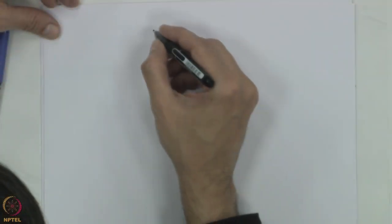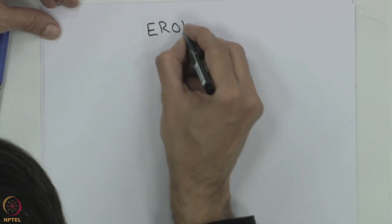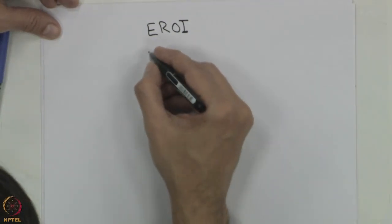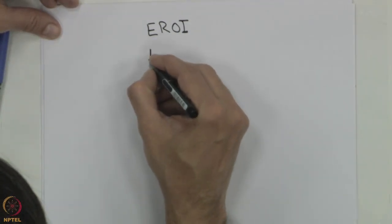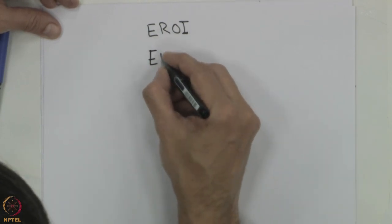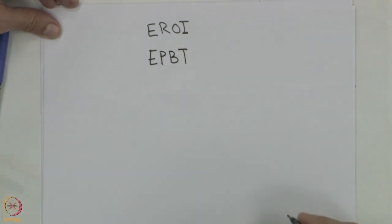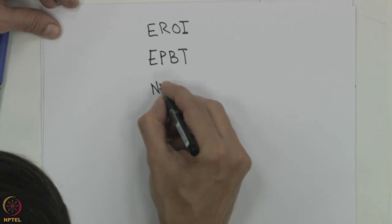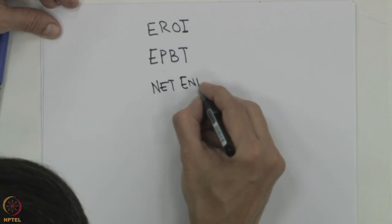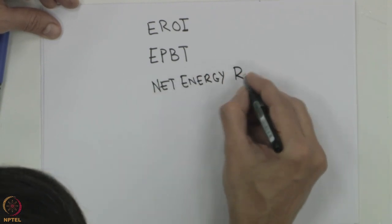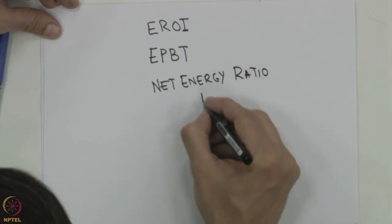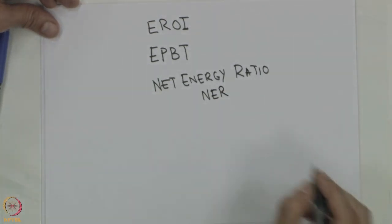We have been looking at net energy analysis and life cycle analysis, and we continue with that with some examples. Before we do that, let me again remind you about the criteria we talked of. We talked about the Energy Return on Investment (EROI), we also looked at the Energy Payback Time (EPBT), and then the Net Energy Ratio (NER). Remember, in the NER we were not using the renewable energy sources.